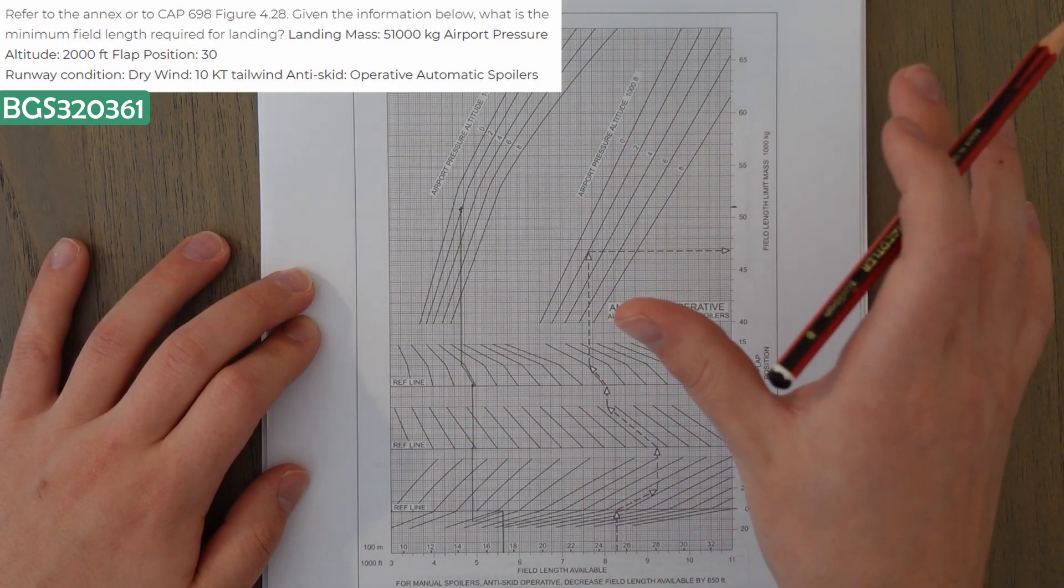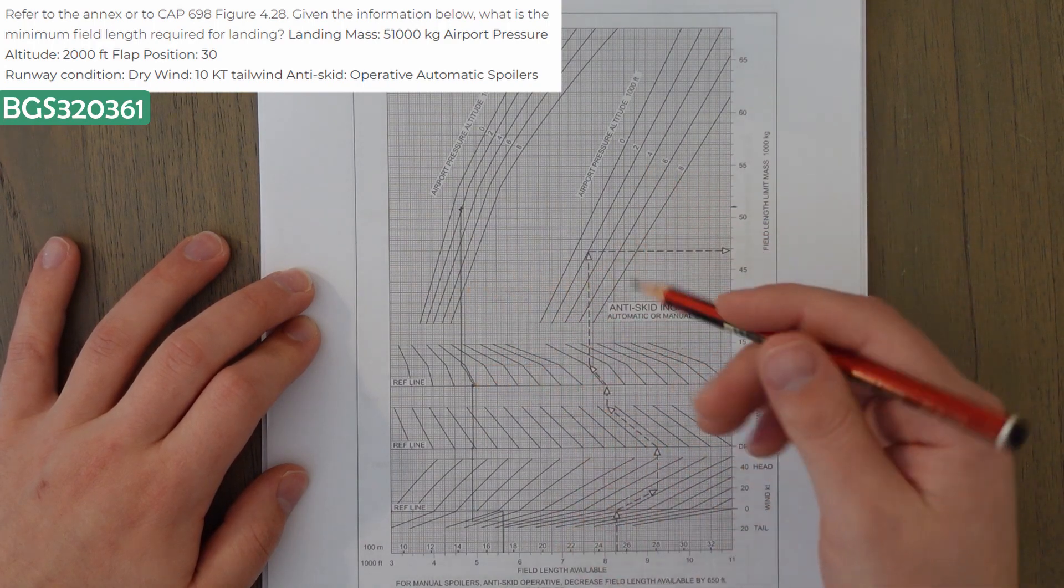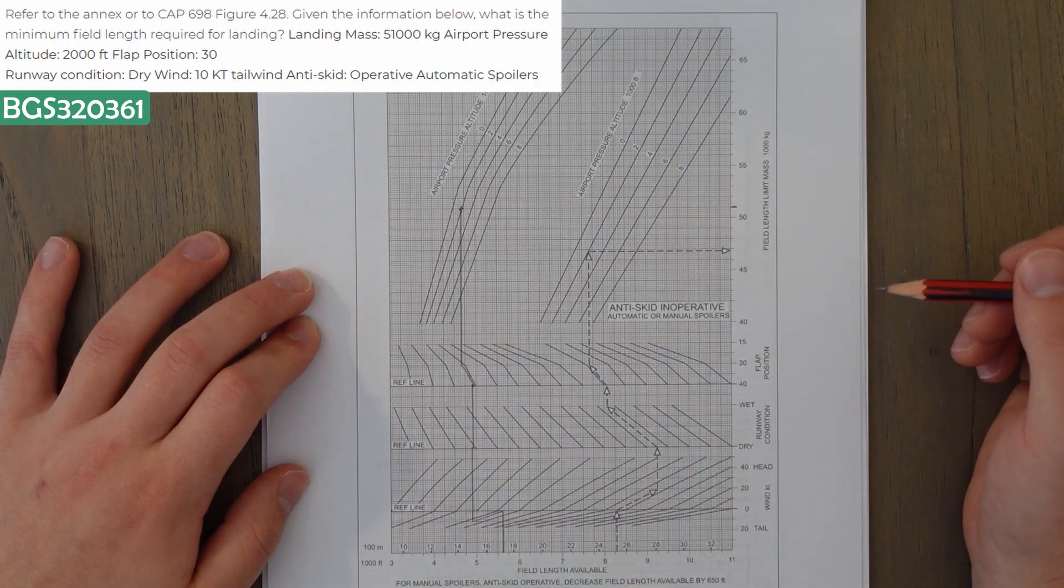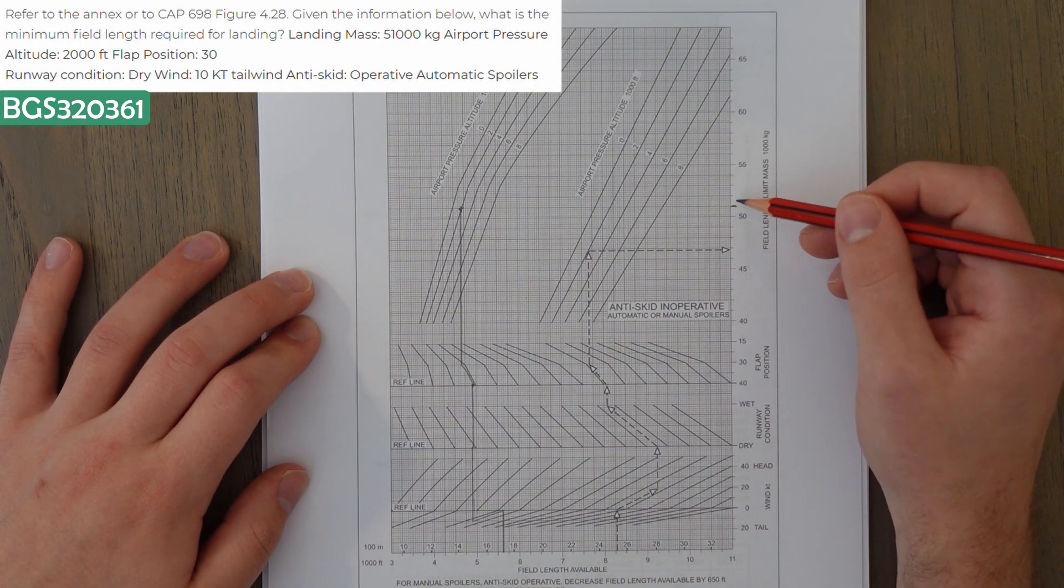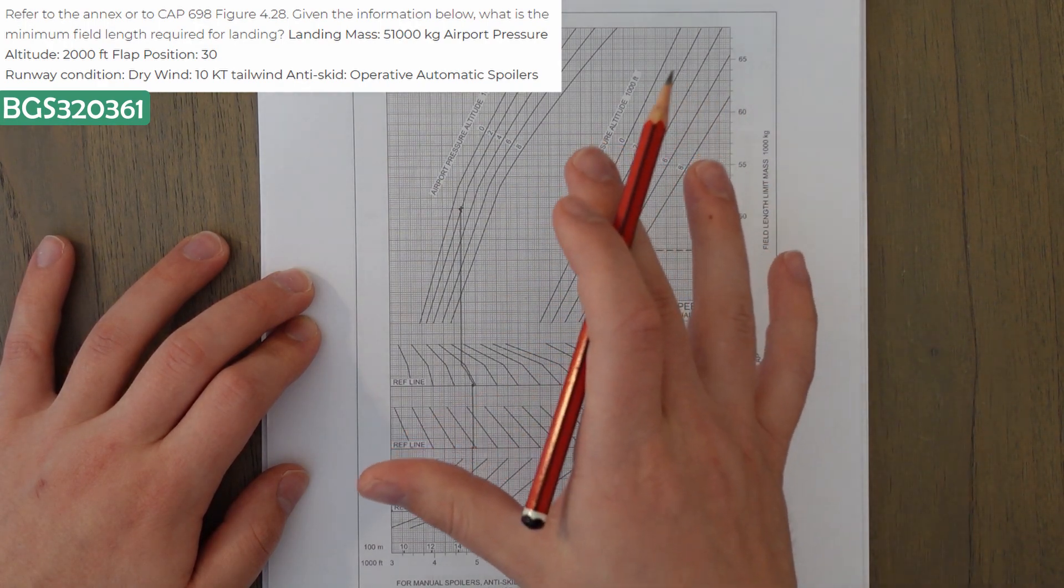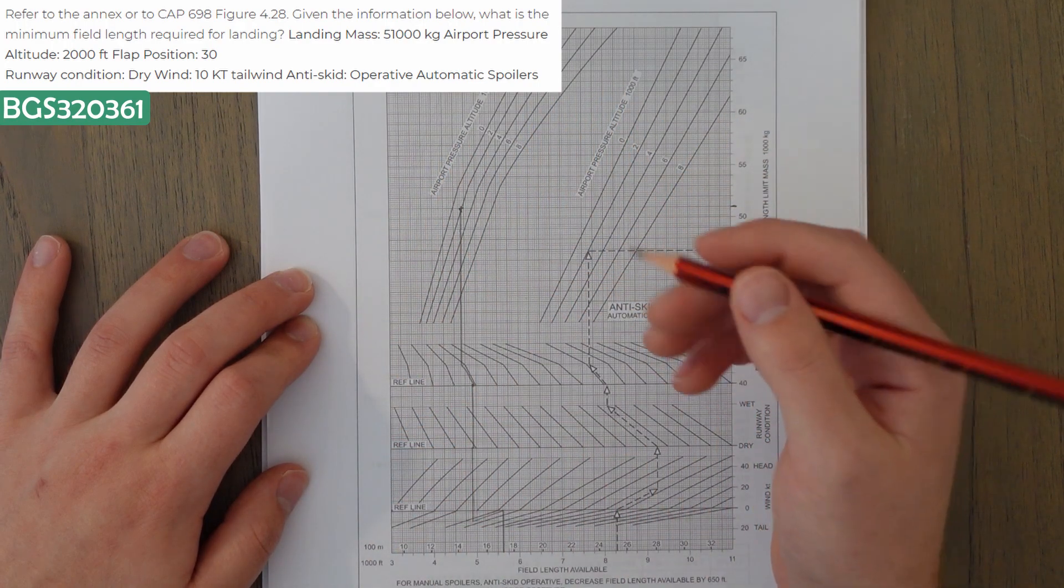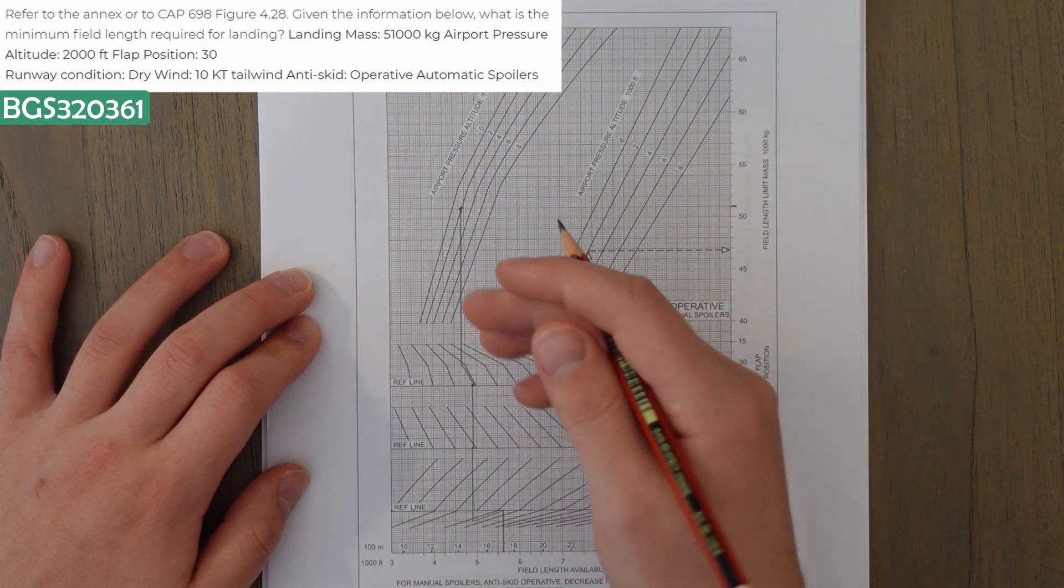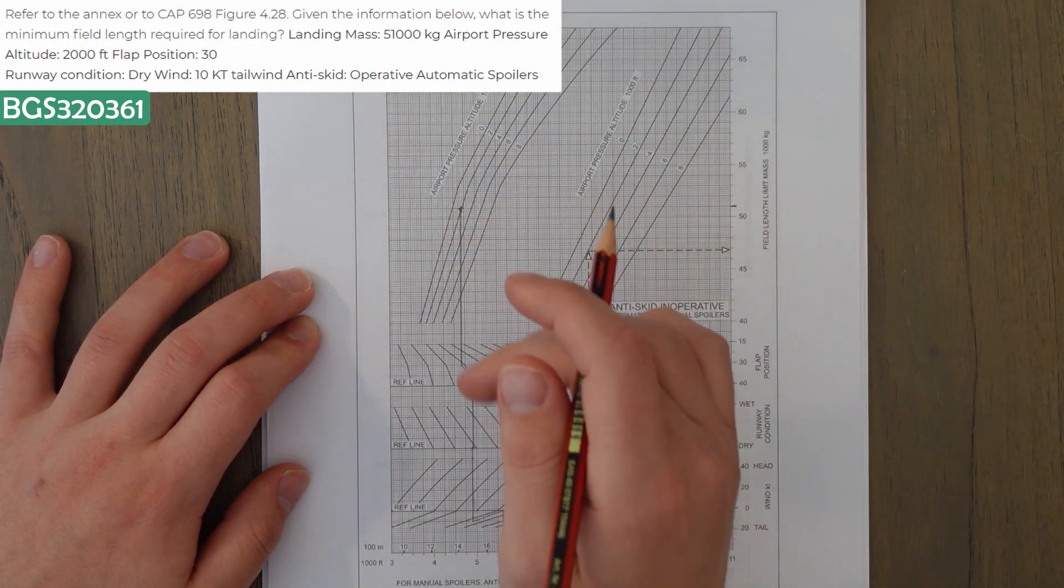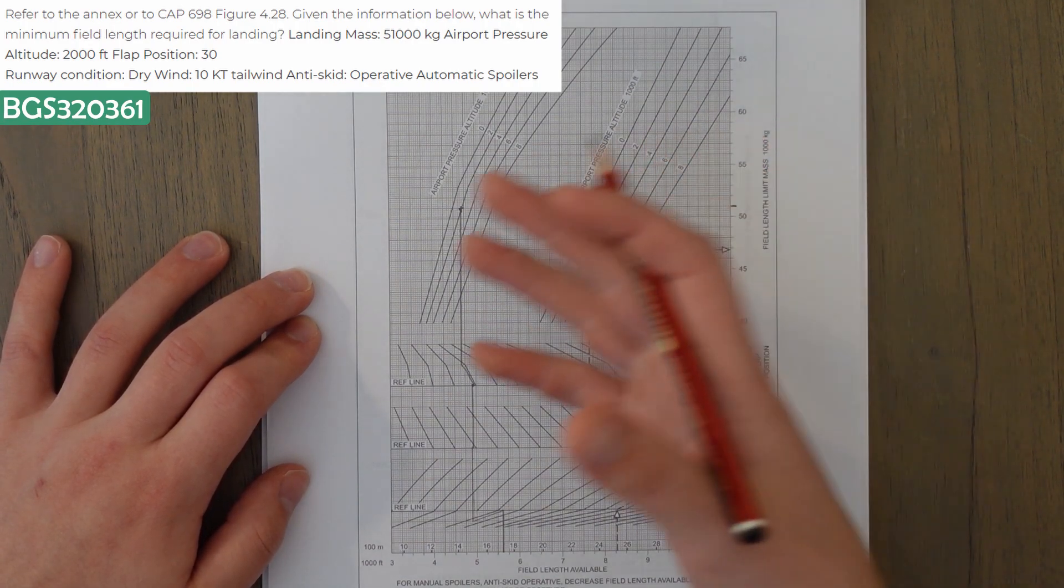So we're just going to use the graph and enter in all the information that we know and follow the example lines so we know what to do in terms of reference lines and these guidelines. So first we have a mass of 51,000 kilograms, which is here. And I've already drawn in my example because when I was filming the Class B stuff, I had to do a second take because when I was actually drawing them live, all you could see was the back of my head because I was focused on where these lines are.